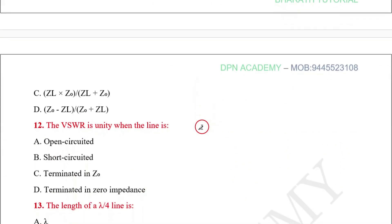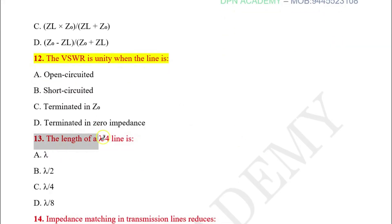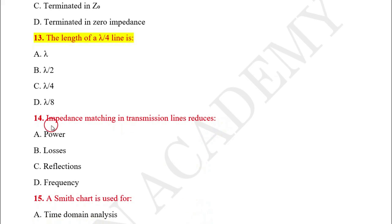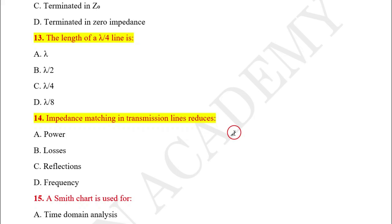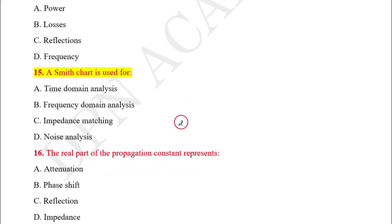Question number twelve: The VSWR is unity when the line is? Question number thirteen: The length of a lambda/4 line is?